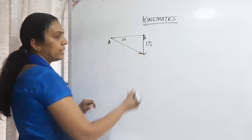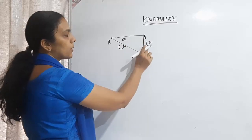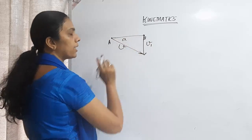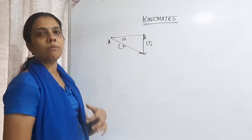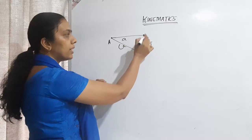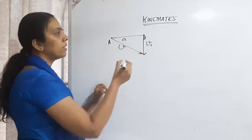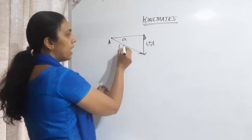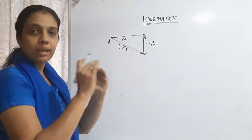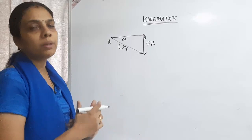Boy A will be running in the direction of boy B, moving with velocity v, while boy B is moving with velocity v₁. We can write the distance covered by B in time t as v₁·t and the distance covered by A as v·t. In our diagram, everything should be consistent — if we are marking distances, all values should be distances.